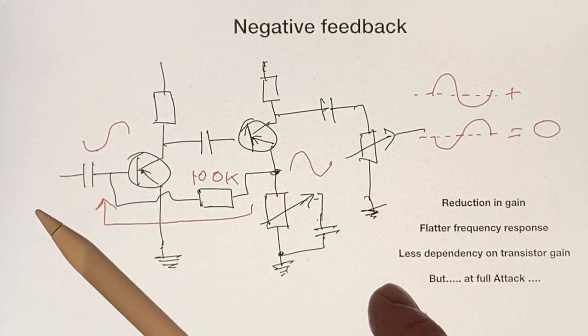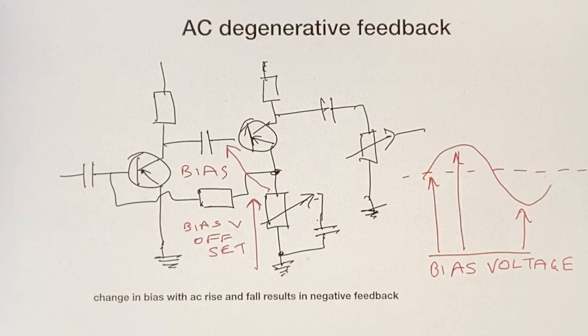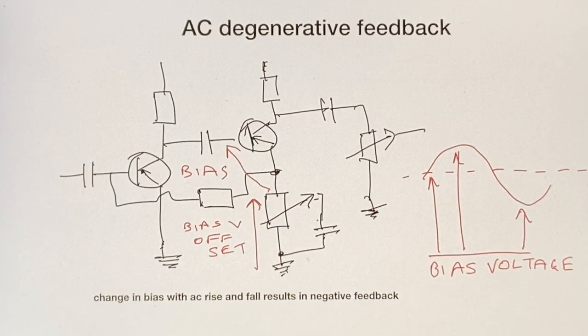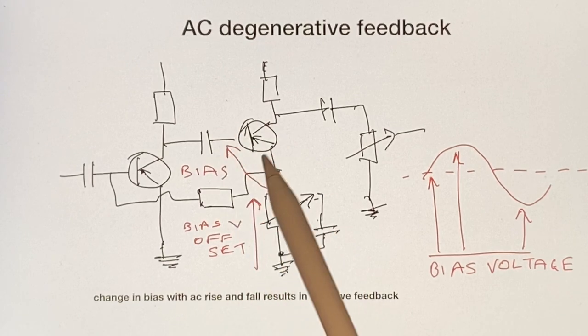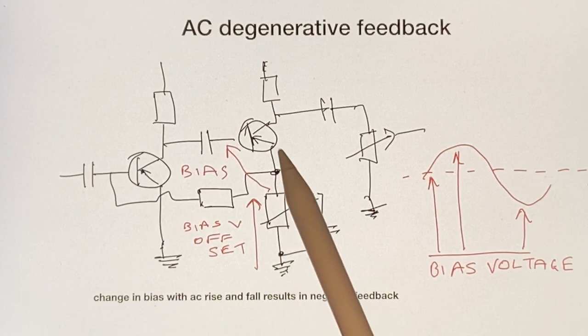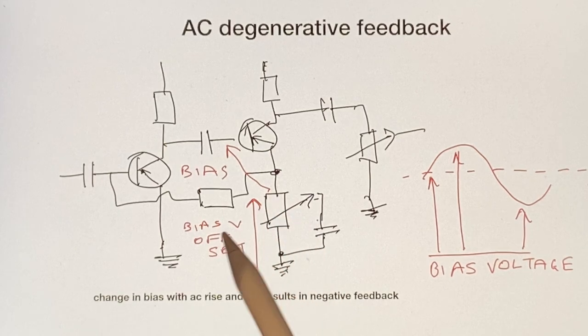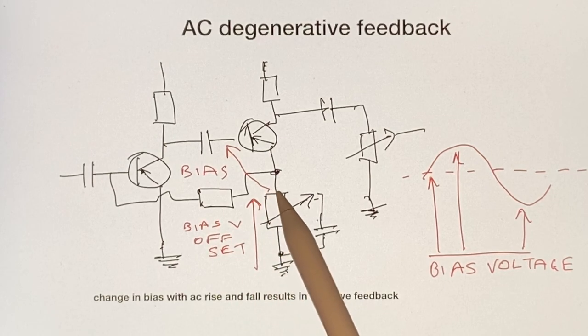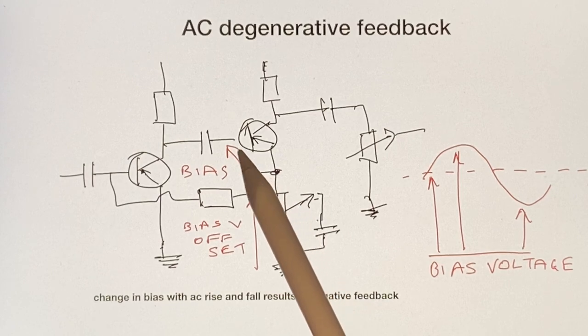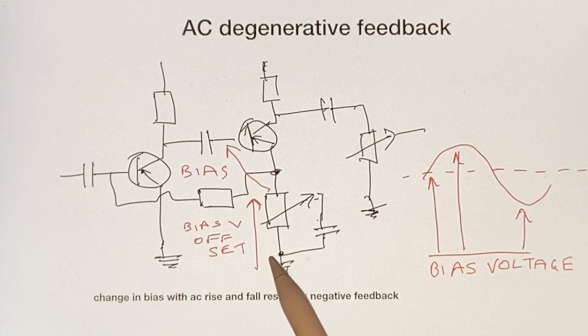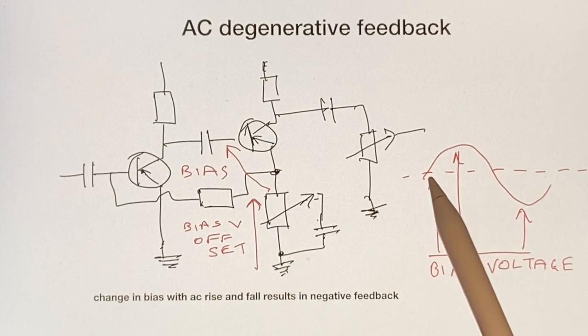But at full attack, let's have a look. There is also a thing called AC degenerative feedback going on here. This is a separate thing. When we have this resistor on the emitter here, you have a bias voltage offset here, and the bias of the transistor is actually now between there and there, not from here and ground.